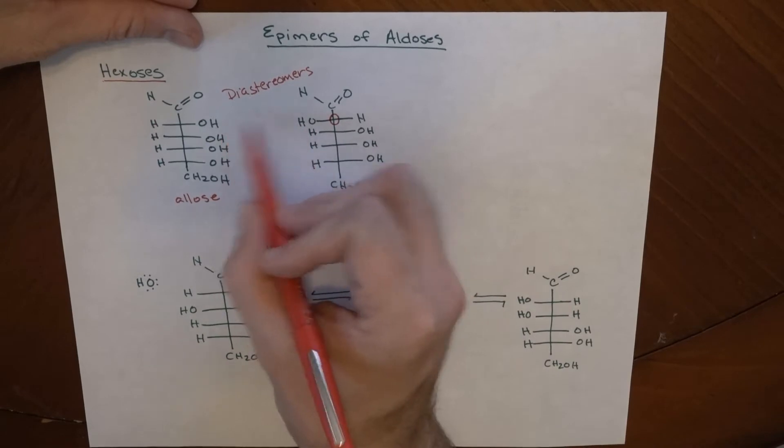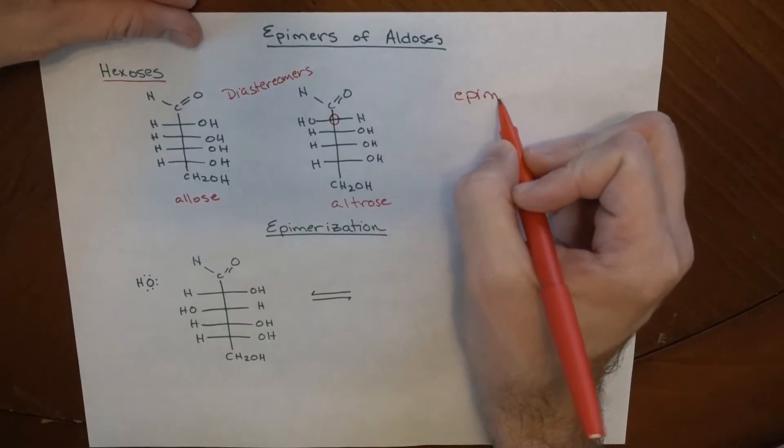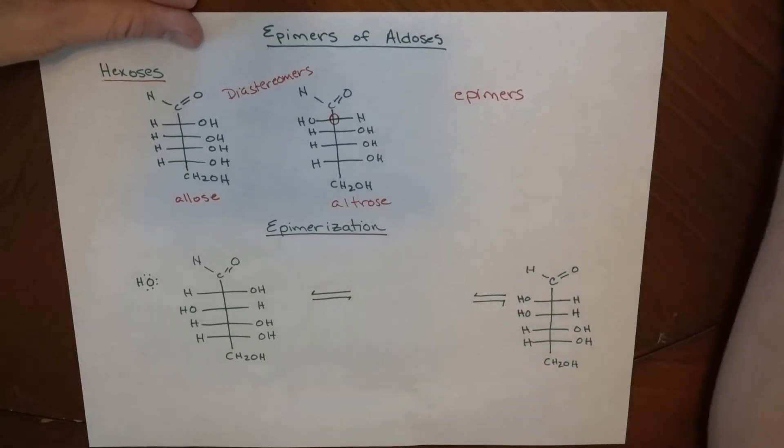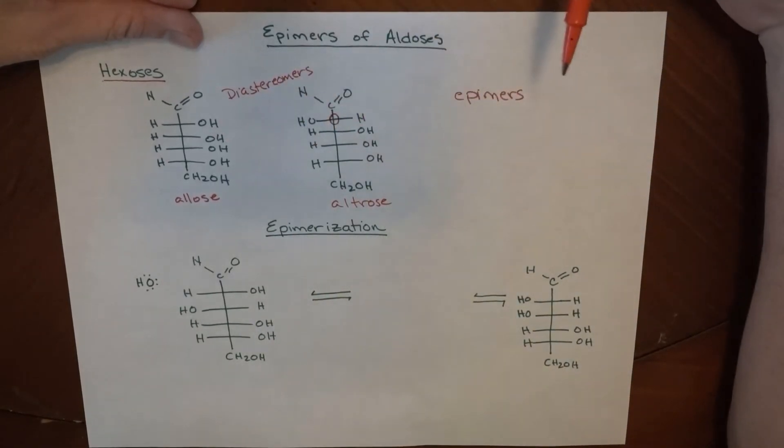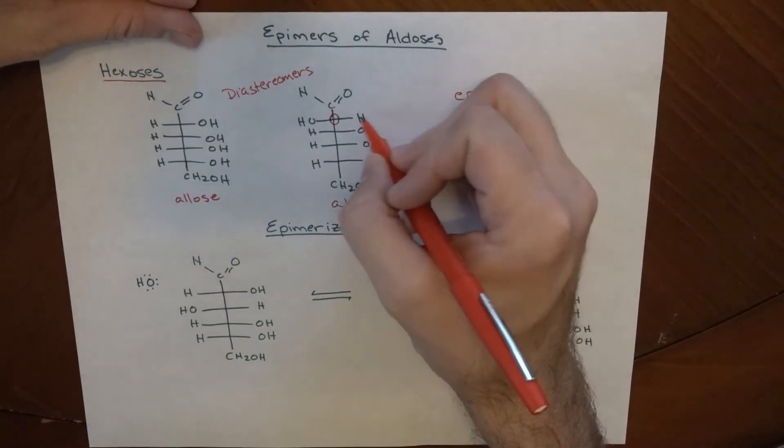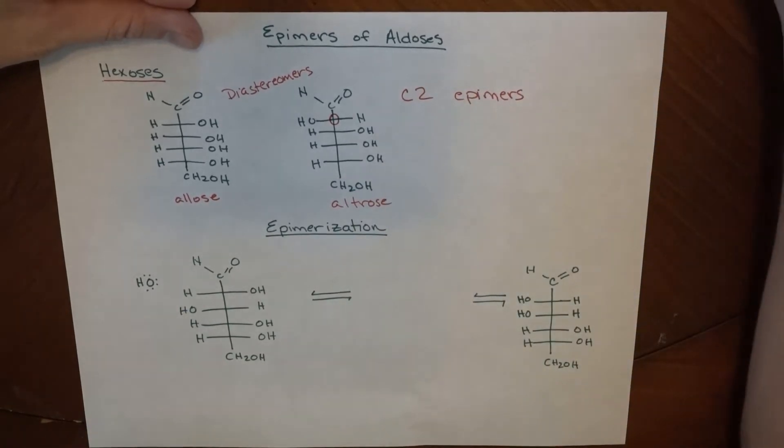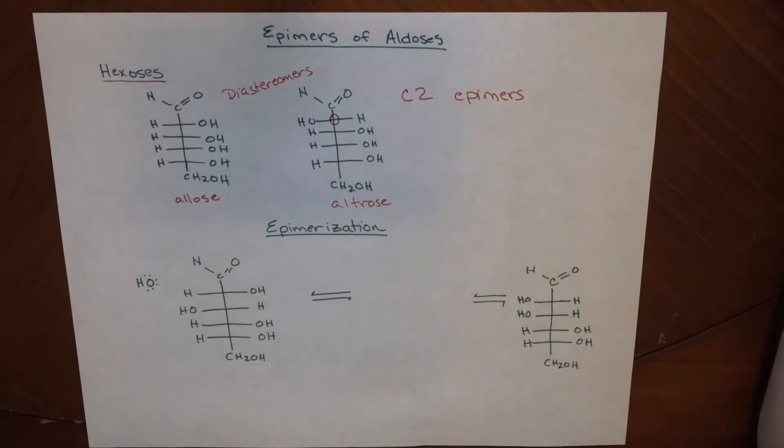But these also would be referred to as epimers. That is the special word we use to describe how two different sugars with a difference at one stereocenter can be different from one another. Specifically, because this is the second carbon, we would call these C2 epimers. That's the relationship we use to describe how the two of those interact with each other.